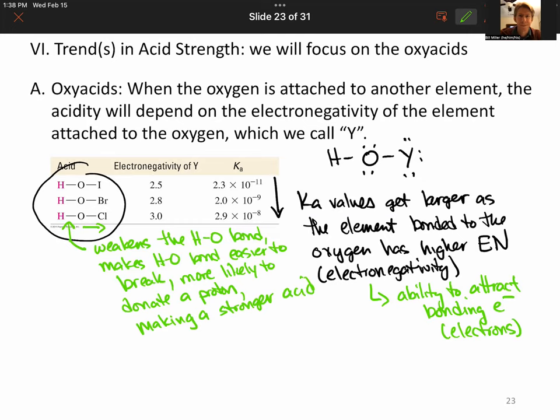So there's a lot going on here, but the idea is that stronger acids have weaker HO bonds. And we can influence that depending upon which of these elements is next to it.